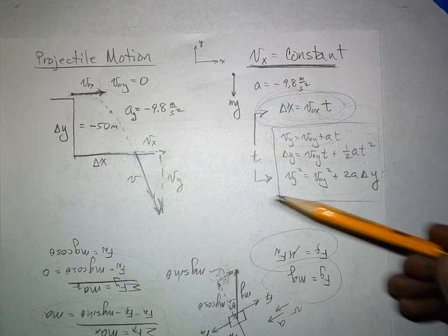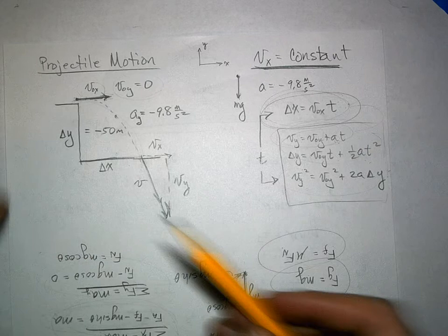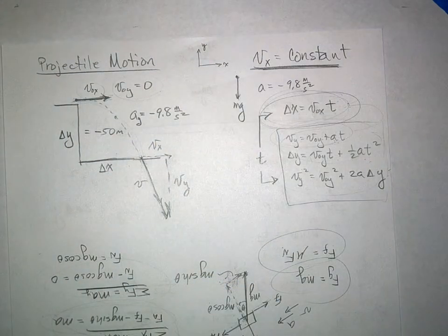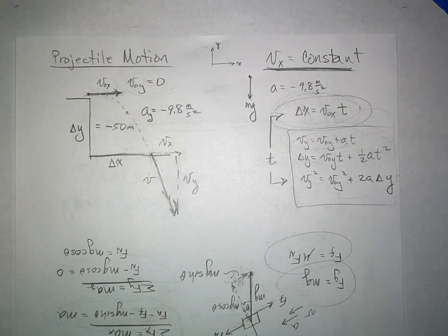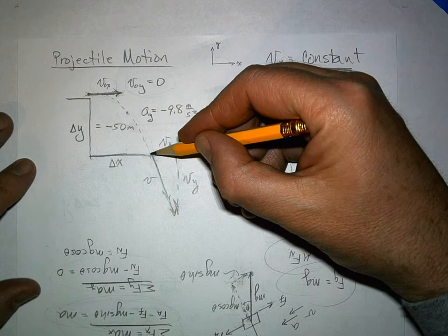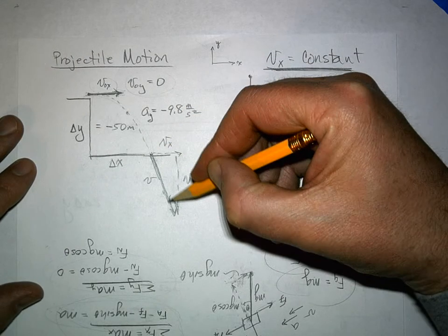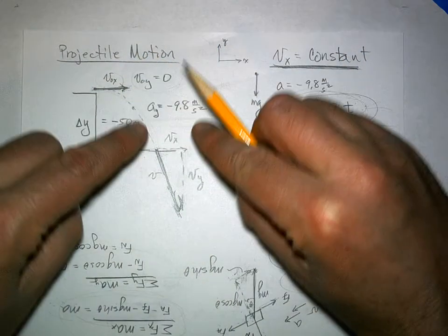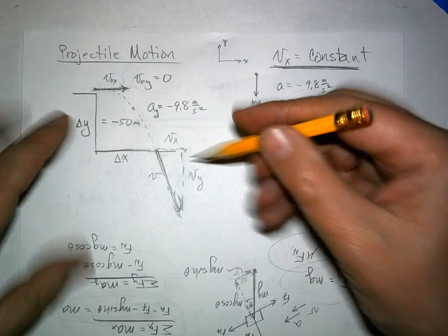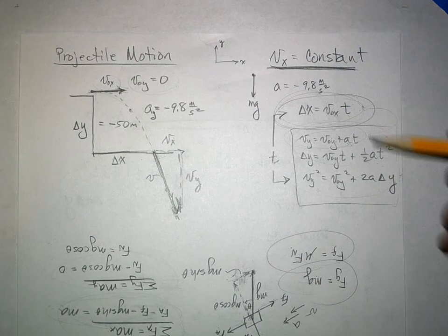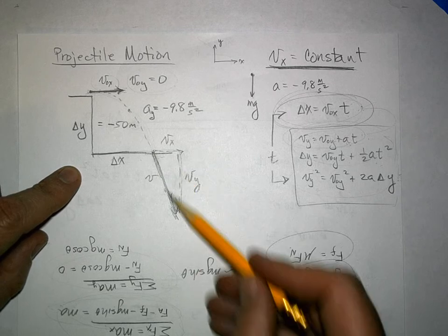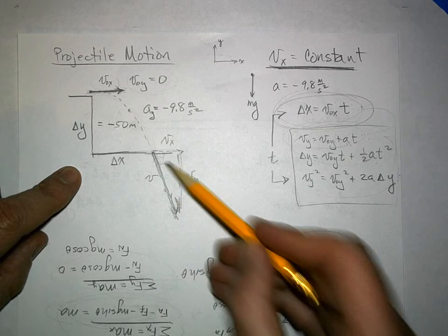You might be asked to find the final velocity just before the object hits the ground. The object carries its constant horizontal velocity and gains a large downward velocity component. Use the kinematic equations to find the final y-velocity, then use the Pythagorean theorem to find the overall final velocity magnitude and its downward angle.